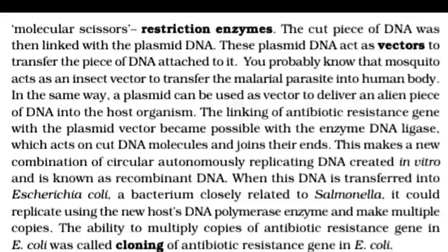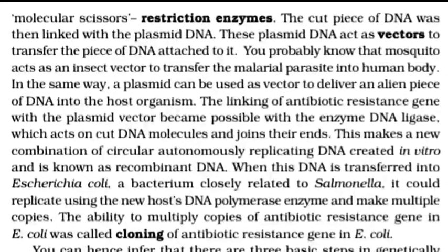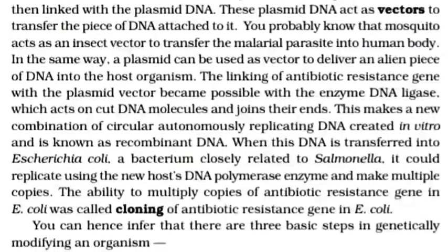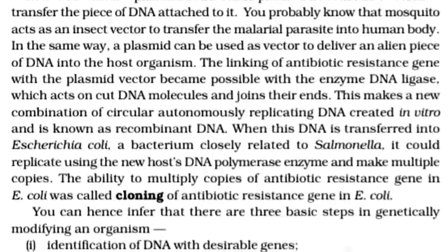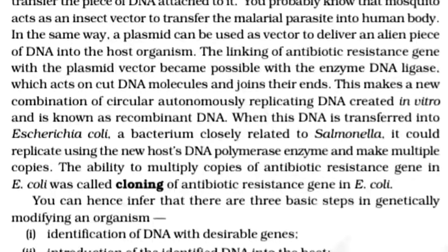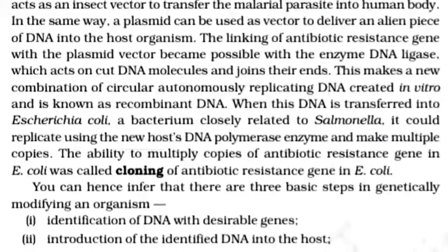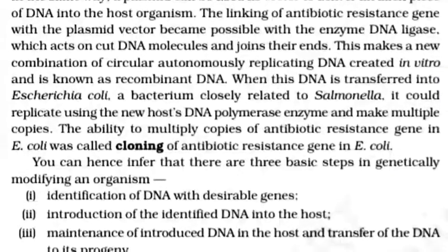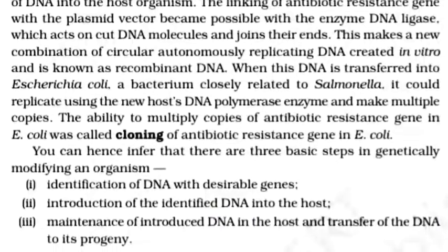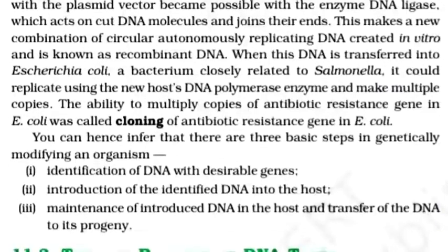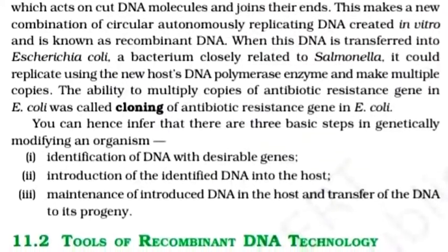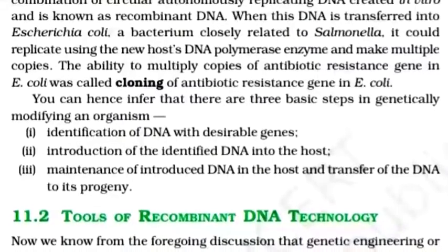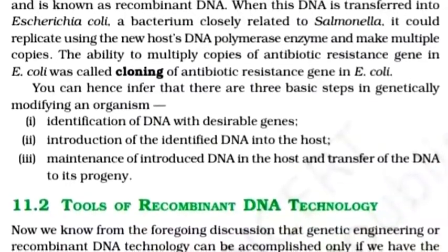The cut piece of DNA was then linked with the plasmid DNA. This plasmid DNA acts as a vector to transfer the piece of DNA attached to it — just as a mosquito acts as an insect vector to transfer the malaria parasite into humans. The linking of the antibiotic resistance gene with the plasmid vector was made possible with the enzyme DNA ligase, which joins the ends of cut DNA molecules, creating a new combination of circular, autonomously replicating recombinant DNA. When this DNA was transferred into E. coli, it could replicate using the host DNA polymerase and make multiple copies. This ability to multiply copies of the antibiotic resistance gene in E. coli was called cloning of the antibiotic resistance gene in E. coli.